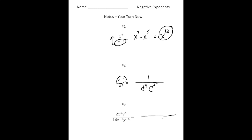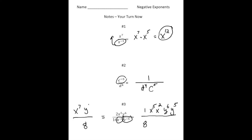Number three: we have 2x to the fifth, y to the sixth, over 16x to the negative second power, y to the negative fifth. First, 2 over 16 reduces to one eighth. We have x to the fifth on top. The x to the negative second power comes up and becomes a positive x squared. The y to the sixth stays on top. The y to the negative fifth comes up as y to the fifth. Simplifying: x to the fifth times x squared is x to the seventh, and y to the sixth times y to the fifth is y to the eleventh — so the answer is x to the seventh, y to the eleventh over 8.